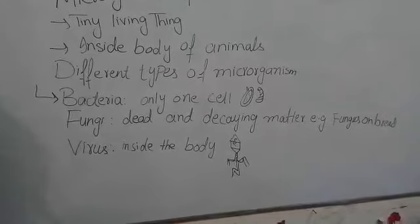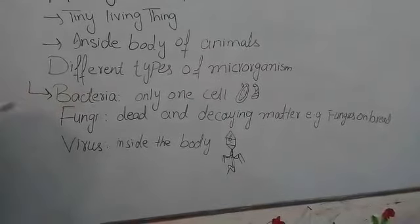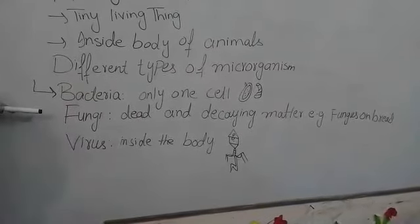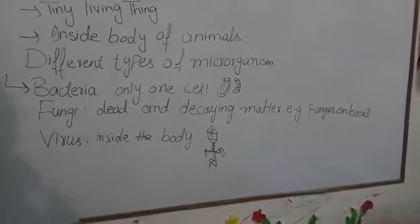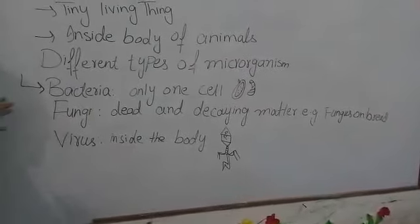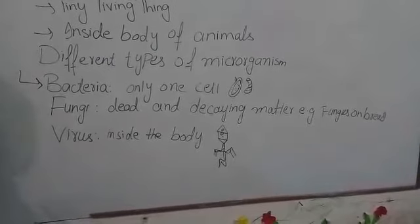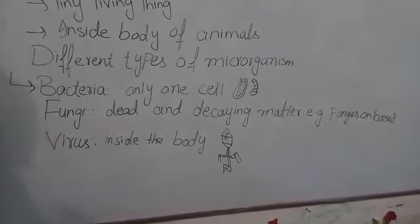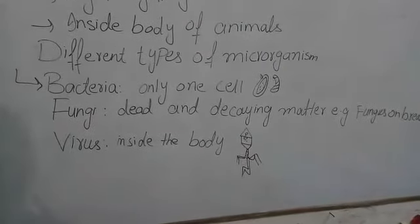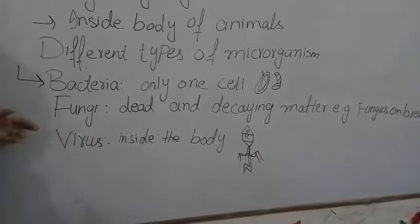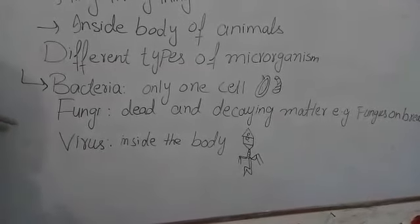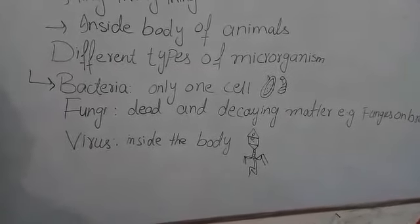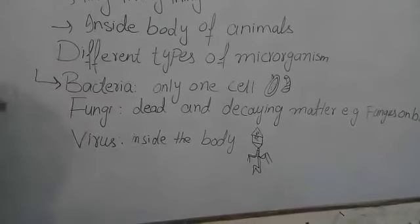Bacteria have different shapes, as drawn for you. Some organisms come from dead or decaying matter. Next is the virus. What is a virus? It is an infection that is present in the human body. The virus causes different diseases, like typhoid, flu, and swine flu. These are all examples of viruses.